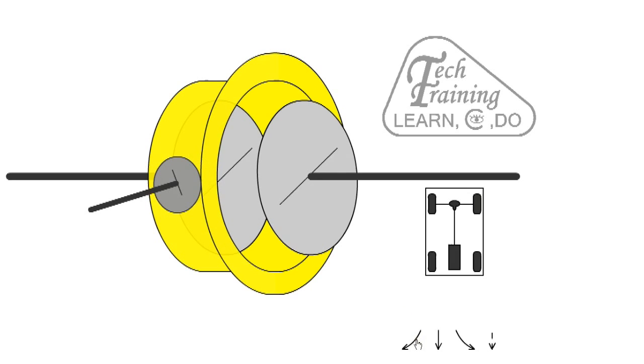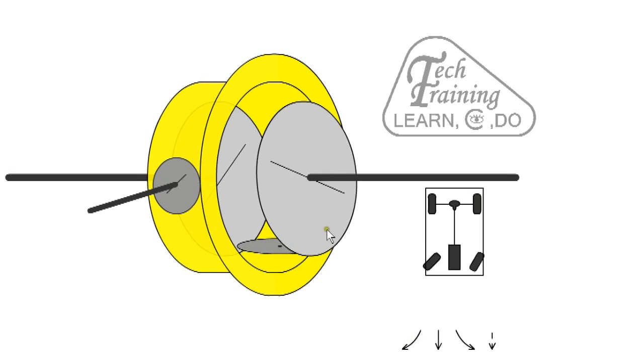When cornering, there is a difference in speed between the sun gears. The planet gear will spin on its own axis as well as revolving. One sun gear will slow down while the other speeds up. If we turn the other direction, the planet wheel will rotate in the opposite direction and again allow for a difference in speed. Obviously all those gears will be lubricated by oil to reduce friction.